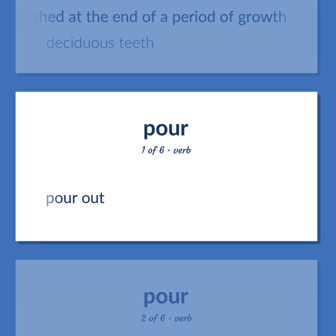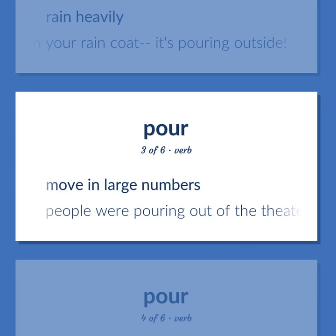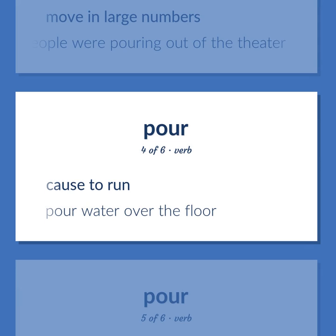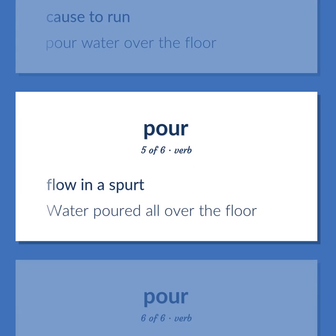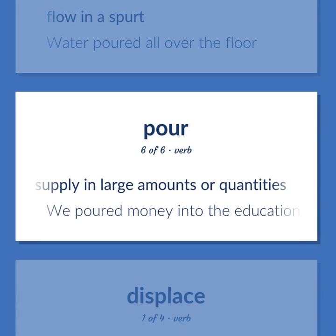Pour: pour out. Rain heavily — put on your raincoat, it's pouring outside. Move in large numbers — people were pouring out of the theater. Cause to run — pour water over the floor. Flow in a spurt — water poured all over the floor. Supply in large amounts or quantities — we poured money into the education of our children.